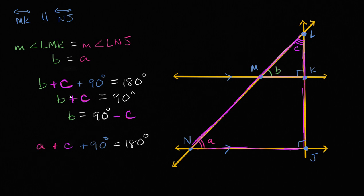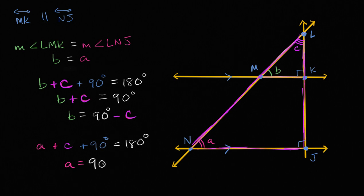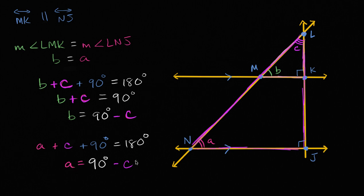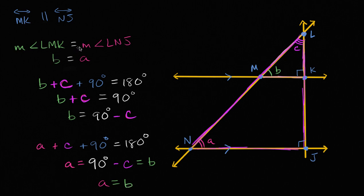We can do the exact same process to solve for a. If we subtract 90 from both sides and subtract c from both sides, we get a is equal to 90 degrees minus c. Now this is interesting: b is equal to 90 degrees minus c, and a is equal to 90 degrees minus c. So we can now say that a must be equal to b — that the measure of angle lmk, which is b, is equal to the measure of angle lnj, which is a.